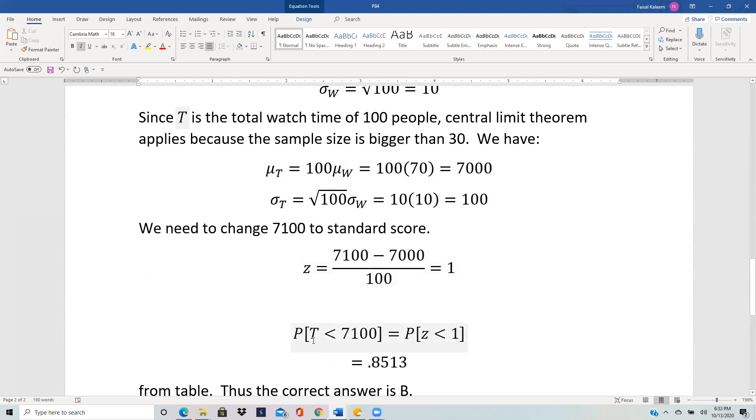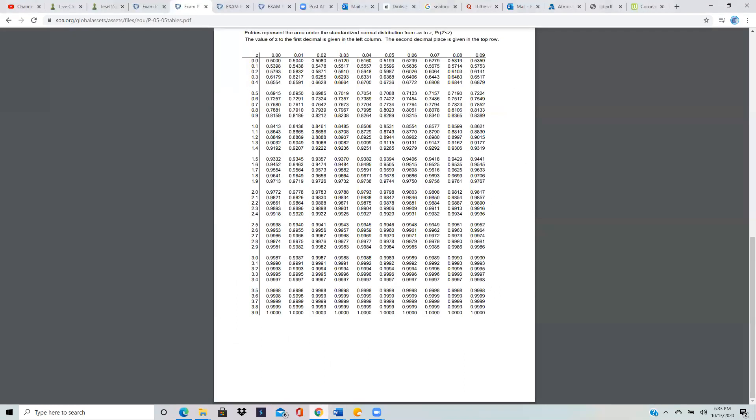Therefore, probability T is less than 7100 is probability Z is less than 1, which from the tables we can see one gives us 0.8413. So that will be the answer.